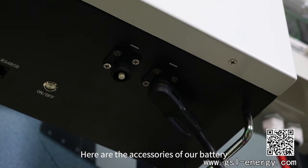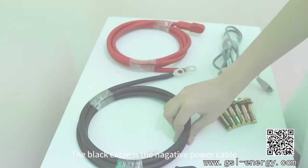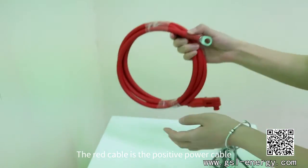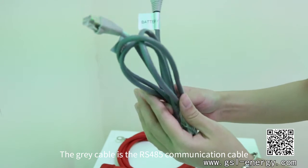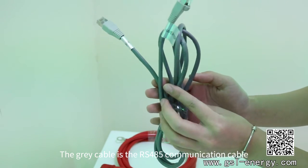Here are the accessories of our battery. The black cable is the negative power cable. The red cable is the positive power cable. The grey cable is the RS-485 communication cable.